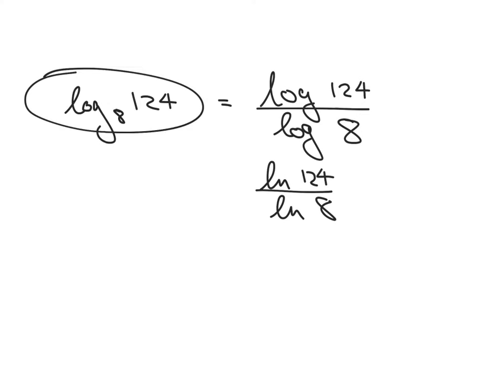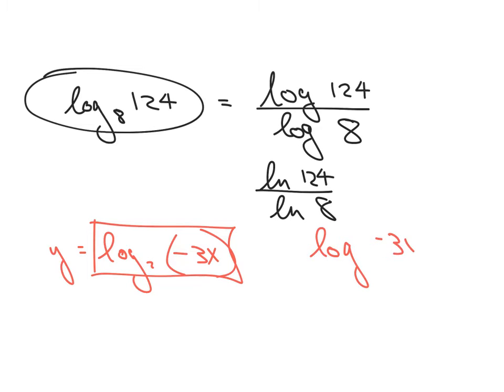Let's do one example. If I have y equals log base 2 of negative 3x, so I want to change this to base 10. All I have to do is log negative 3x over log 2. Or, I can do ln of negative 3x over ln of 2. Either way, you're going to get the same answer. That takes us through example 4 and we'll start with example 5 in the video 5.3 B as in boy.